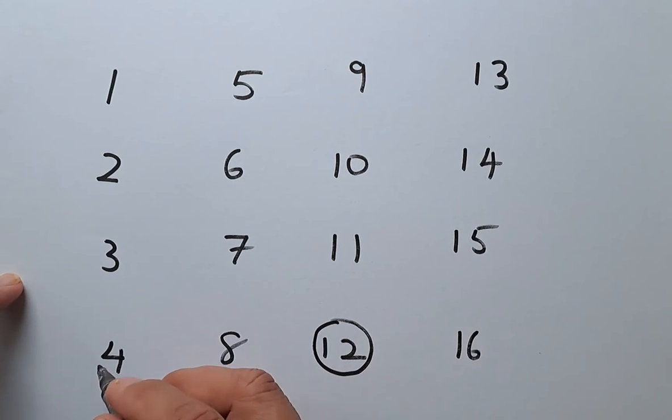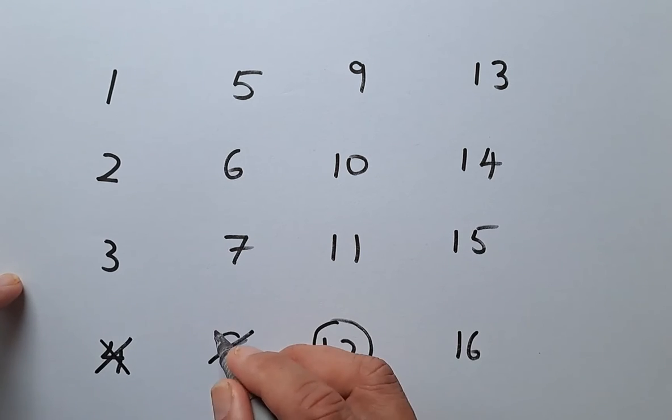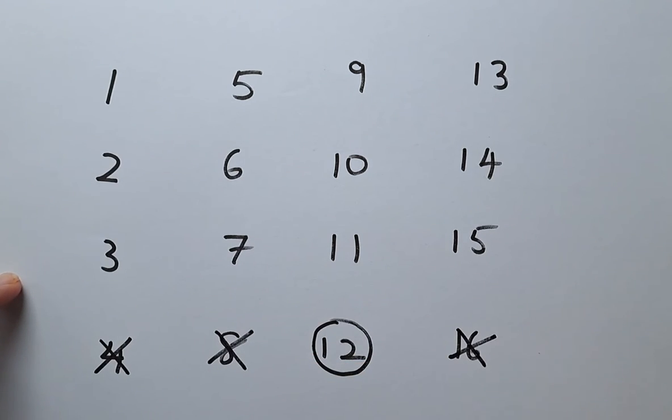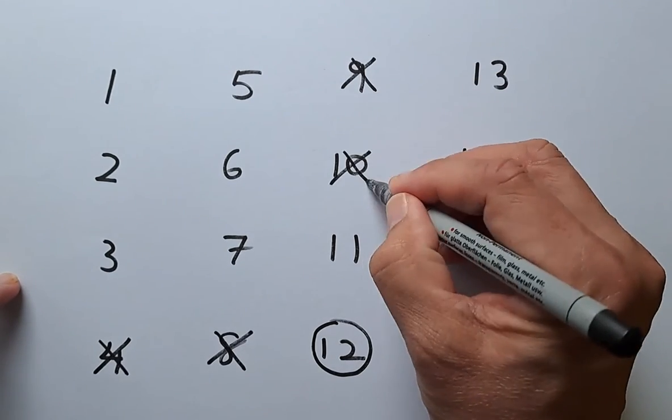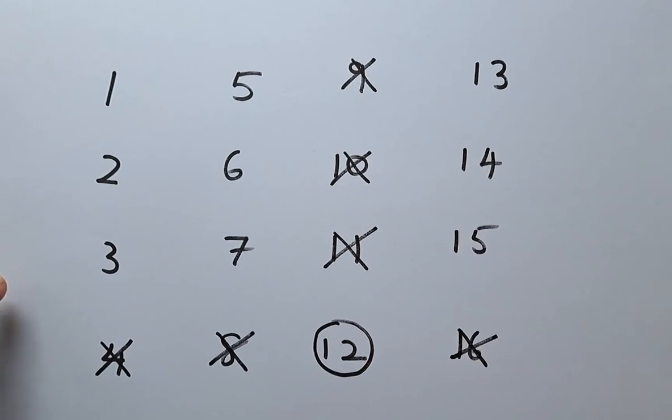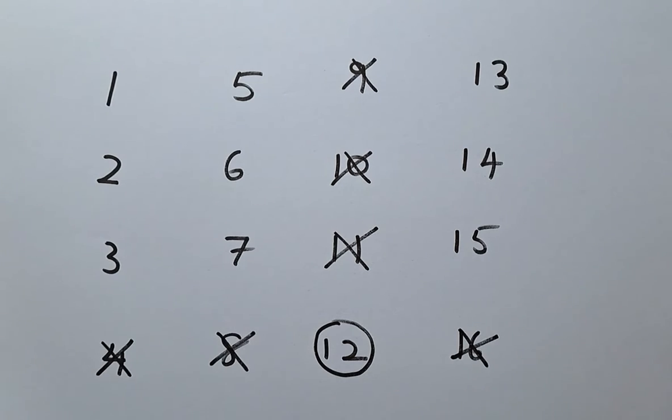So if 12 is chosen as the first number, 4 is deleted, 8 is deleted, 16 is deleted for the row and on the column, 9 cannot be selected, 10 cannot be selected and 11 cannot be selected. So in other words, the second number, you cannot choose the number that has been deleted.